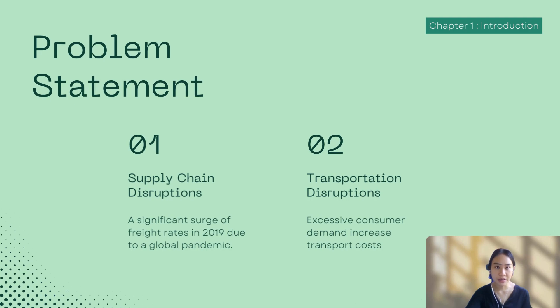The first problem is supply chain disruptions, due to a significant surge of freight rates in 2019 caused by the global COVID-19 pandemic. The second problem is transportation disruptions caused by excessive consumer demand and insufficient cargo space, which increases transportation cost.